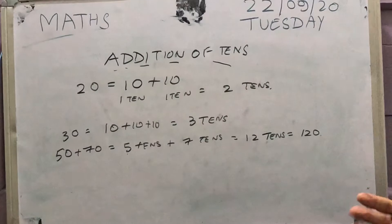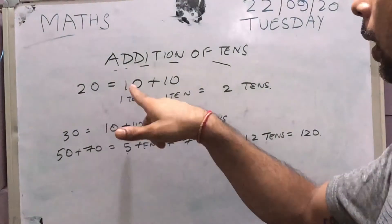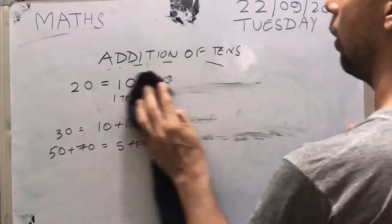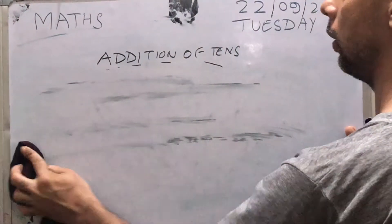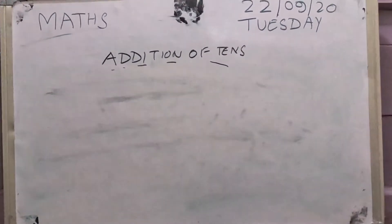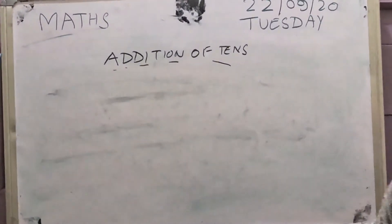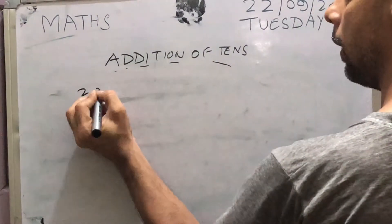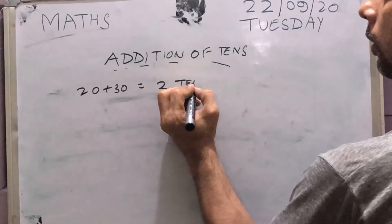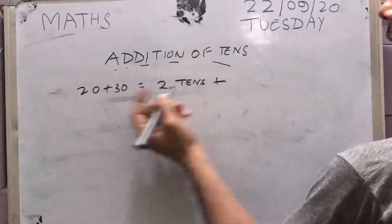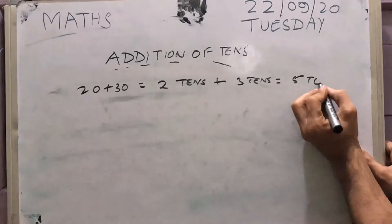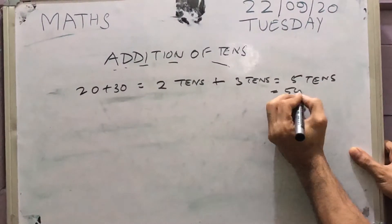So any number can be divided into number of tens. So if you want to do addition, for example, 20 plus 30. What you can do, you can write 2 tens plus 3 tens, which is equal to 5 tens, which is equal to 50.